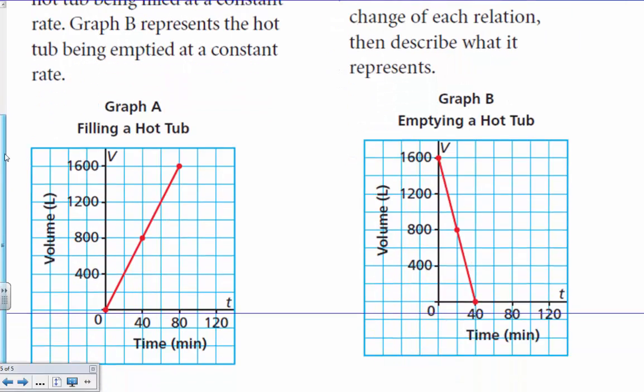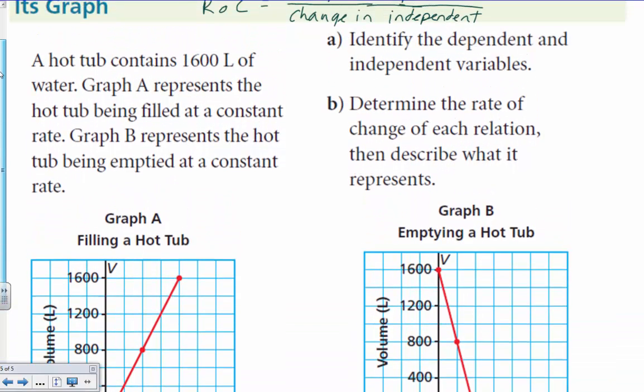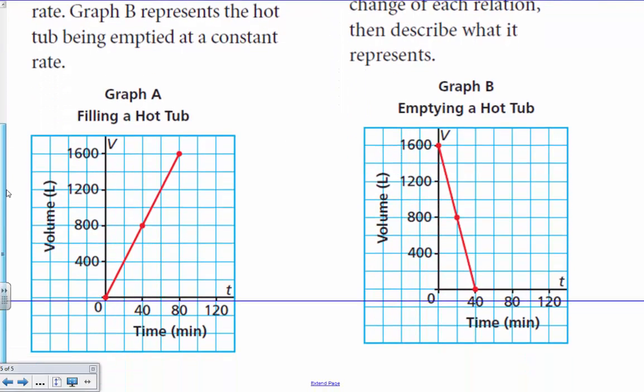So, let's look at this. How can we figure this out? What are we going to figure out? First thing, identify the dependent and independent. This, folks, should be a gimme. V, the vertical, is my dependent. T is my independent.